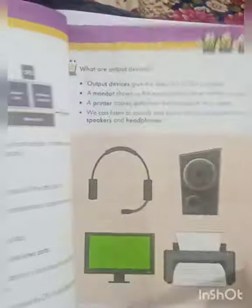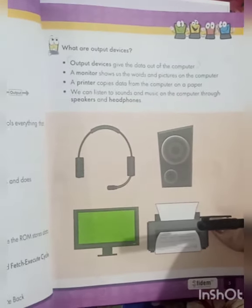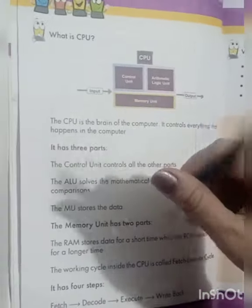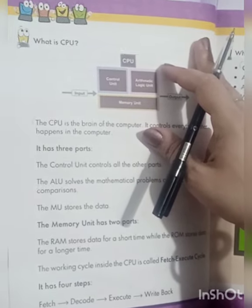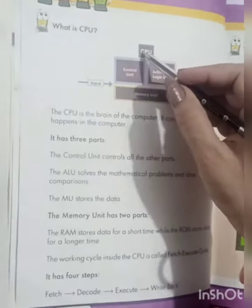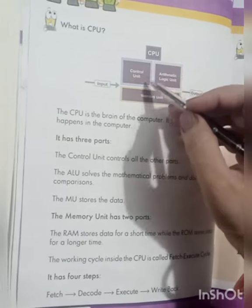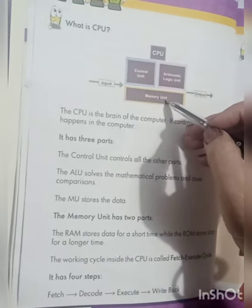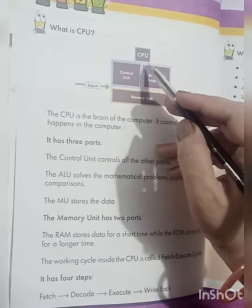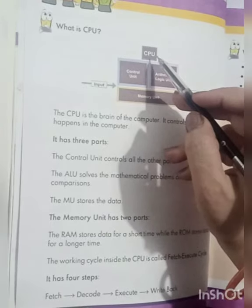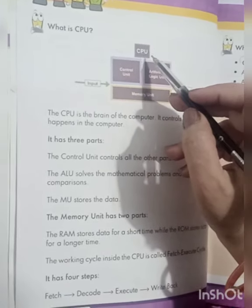Open your computer books and come to page number 4 and 6. Last lecture mein ham ne reading ki ti CPU ke baare mein — that what is a CPU. CPU stands for Central Processing Unit, which has a control unit, arithmetic unit, and memory unit. CPU is the brain of the computer and it controls everything which happens in the computer.